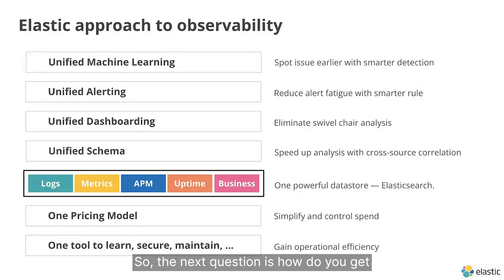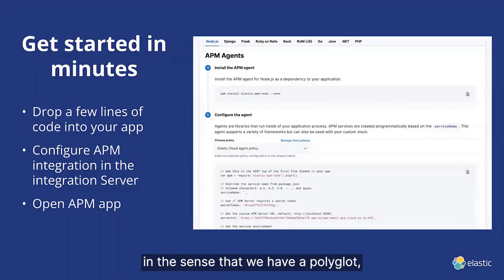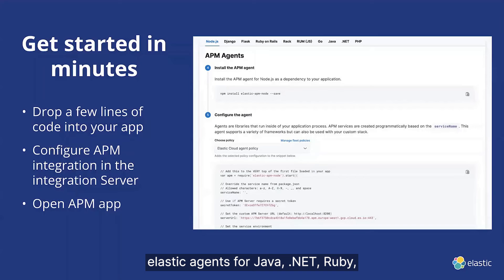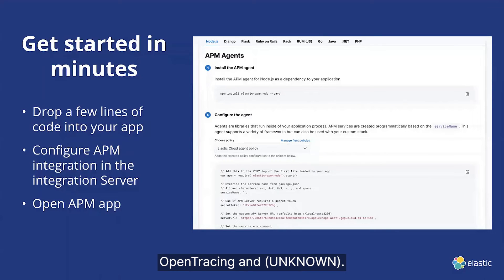The next question is: how do you get started with Elastic Observability? Getting started is very simple and straightforward. Our data collection is extremely flexible — we have polyglot language support with open-source Elastic Agents for Java, .NET, Ruby, Go, and so on, plus support for OpenTelemetry, OpenTracing, and Jaeger.